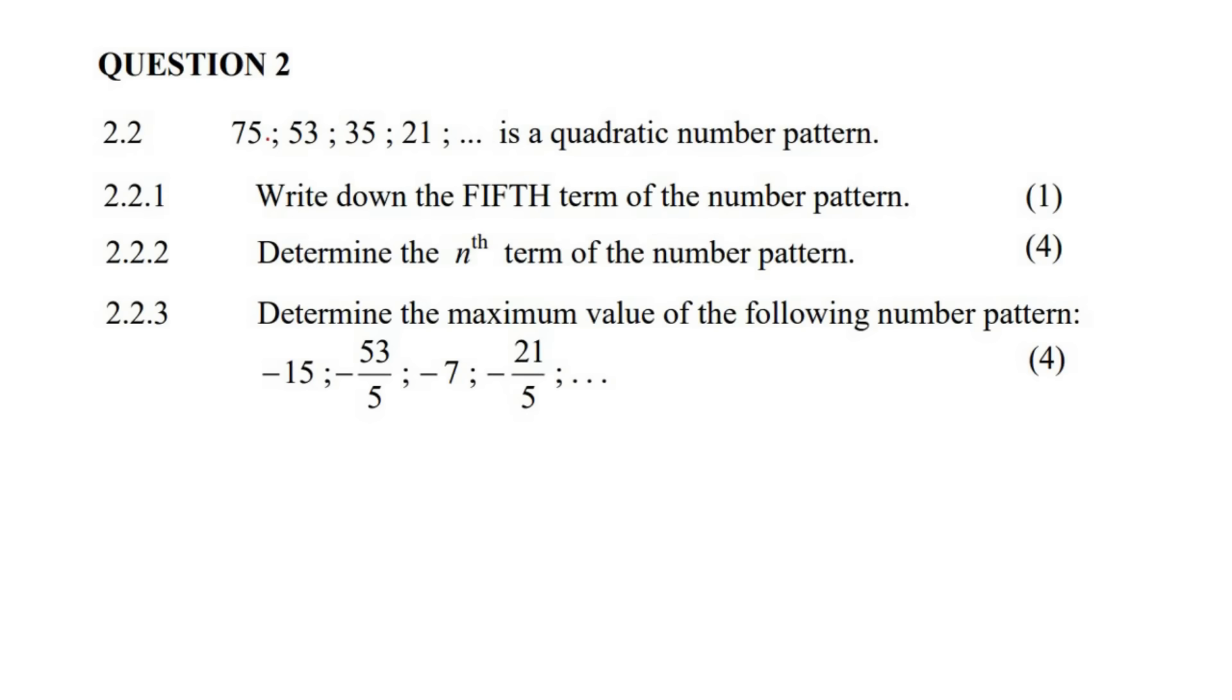This question says that we have 75, 53, 35, 21 as a quadratic number pattern. Write down the fifth term. That should be pretty straightforward, it's only for one mark. So if we go 75, 53, 35, and then 21.